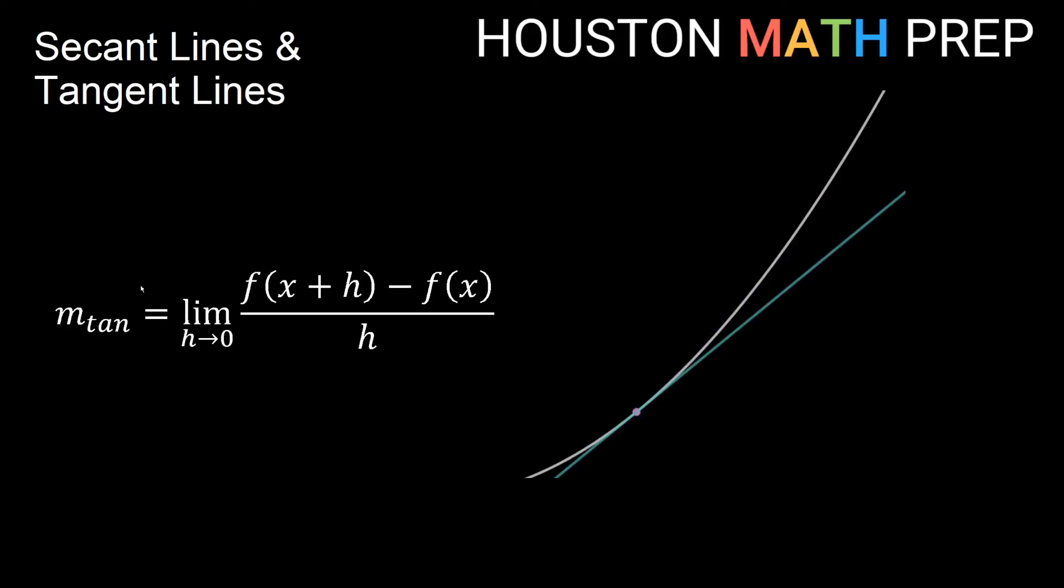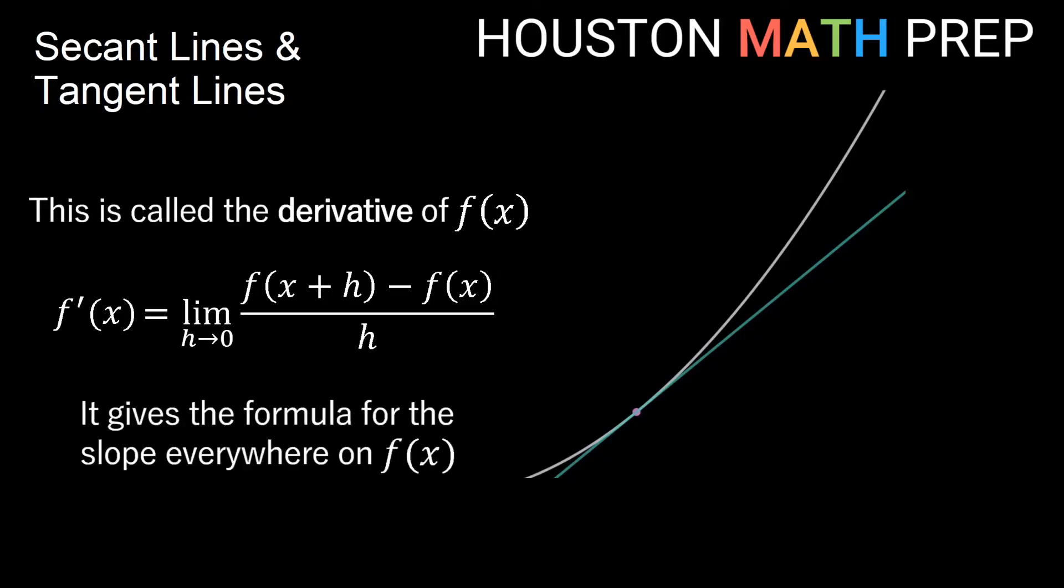If we take the limit as H approaches zero, that's going to give us our tangent slope. If we look at the formula for all tangent slopes everywhere, if I don't just look at this formula for one value of X, but I look at it as a formula for all values of X everywhere on our curve, then I think of that as a function and I call that function F prime of X. This F prime of X is actually what we call the derivative of our original function, and it gives us the formula for the slope everywhere on the function. The derivative is a huge deal in calculus. It'll tell us about slopes of tangent lines and many other things as we continue forward in calculus. All right, thanks for watching everybody. We'll see you in the next video.